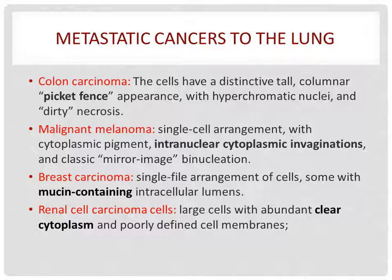Next is metastatic cancers. Metastatic cancers commonly originate from breast cancer, colon cancer, renal carcinoma, bladder cancer, and melanoma. Here are some cytological characteristics: for colon carcinoma, the characteristic is palisading; for melanoma, intranuclear cytoplasmic invagination; for breast carcinoma, mucin-containing intracytoplasmic lumens; and for renal cell carcinoma, abundant clear cytoplasm.